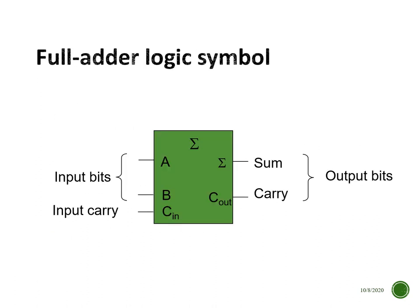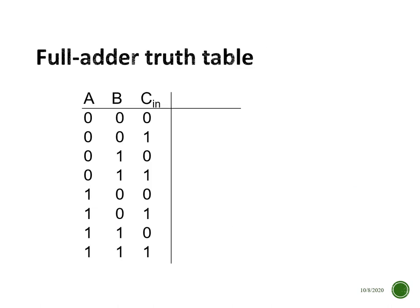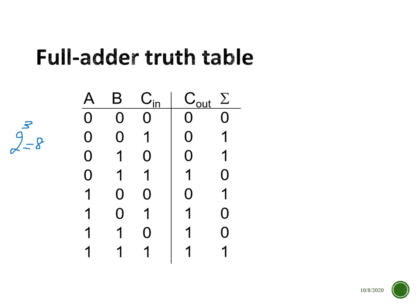The symbol for the full adder has inputs A and B plus a carry in from a previous stage, and it produces a sum and carry out as the two outputs. The truth table now has three inputs, so two to the three gives eight combinations — zero through seven — and for each combination we determine the sum and carry outputs.